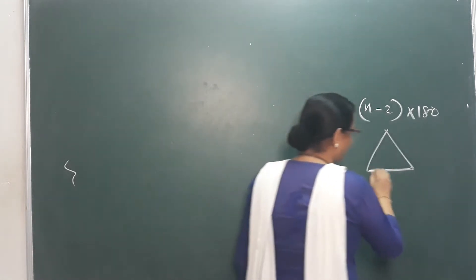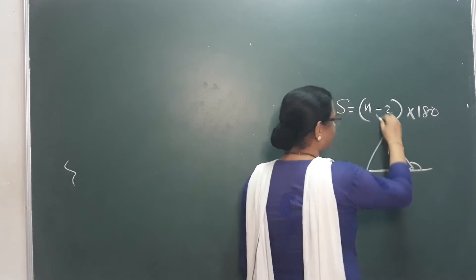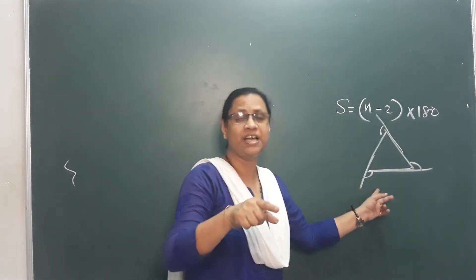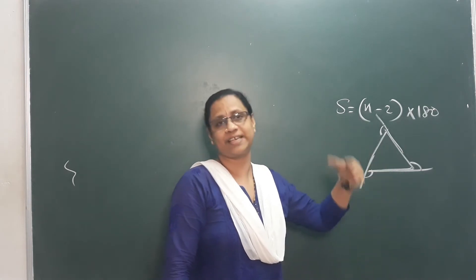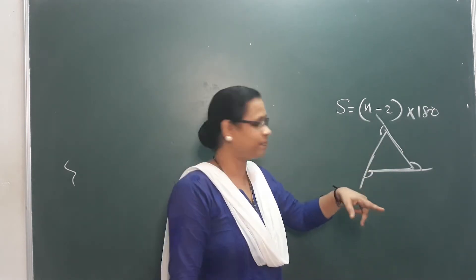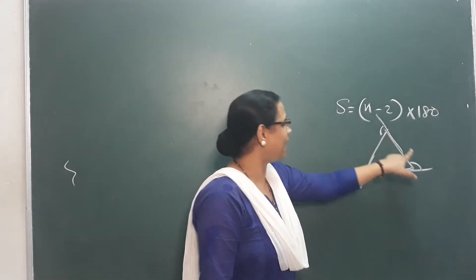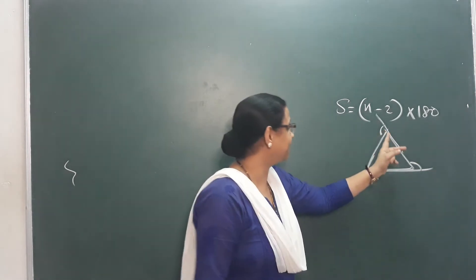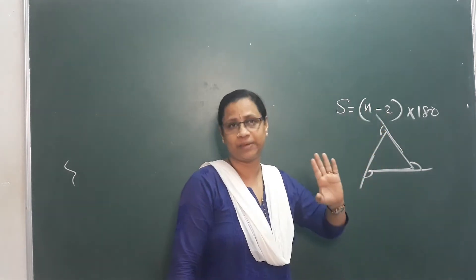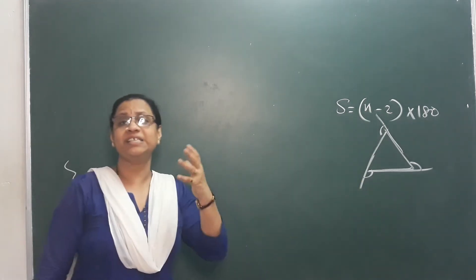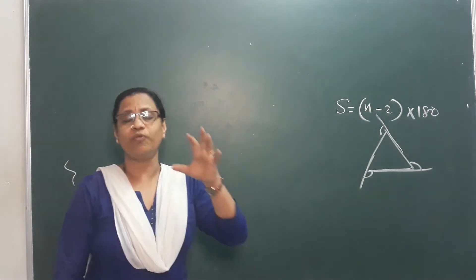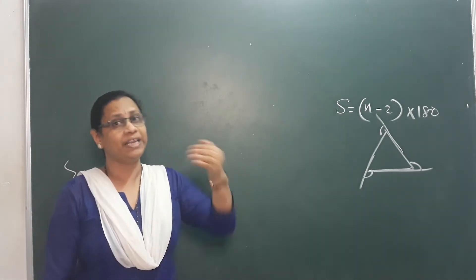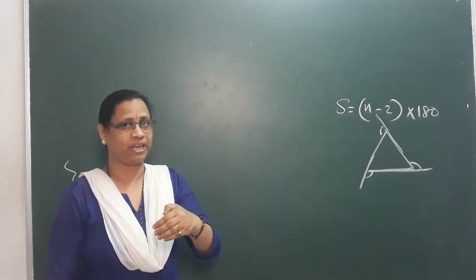Now we look at the outer angle. If we take the outer angle, we can find the outer angle sum. We studied the inner angle in the previous exercise. The outer angle sum is an unchanging value — let's look at a figure to understand this.